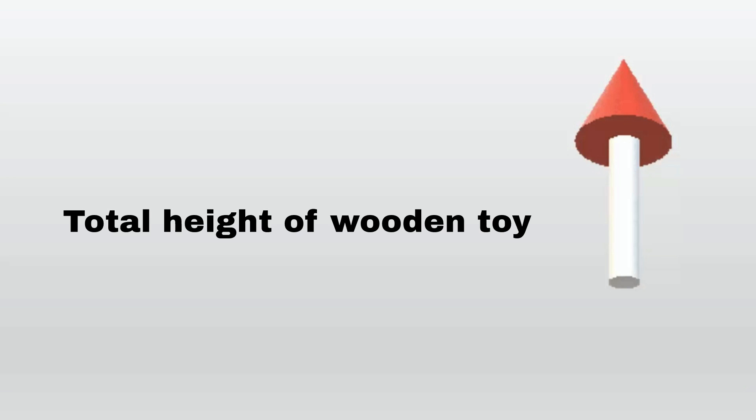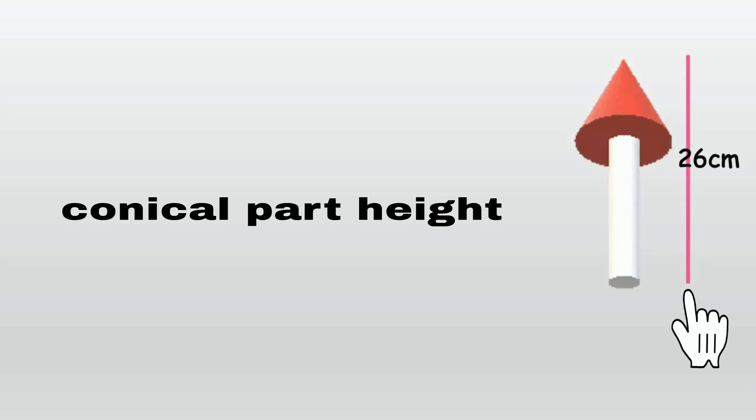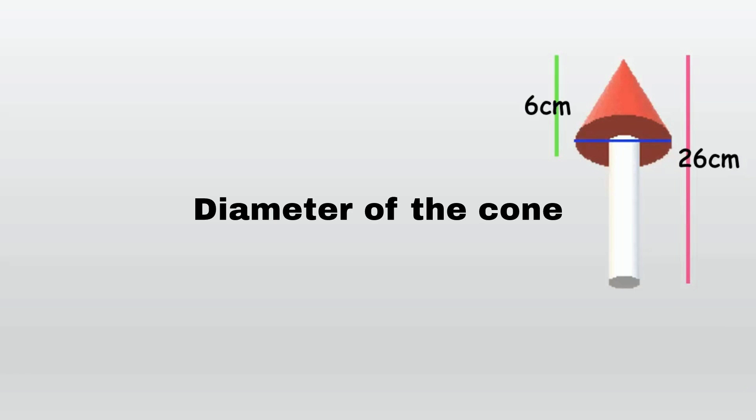Friends, according to the question, total height of the wooden toy is 26 cm. The conical part height is given as 6 cm, so height of the cone is 6 cm. Diameter of the cone is 5 cm, so radius is 2.5 cm.